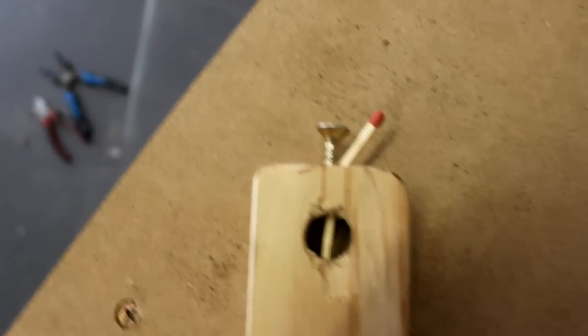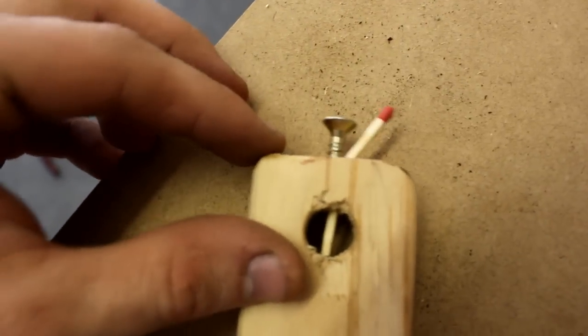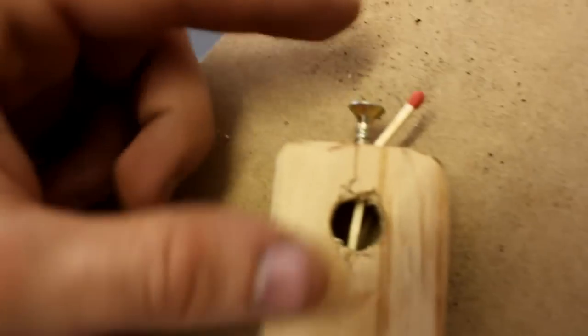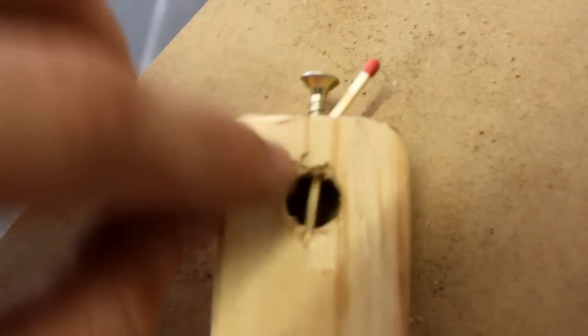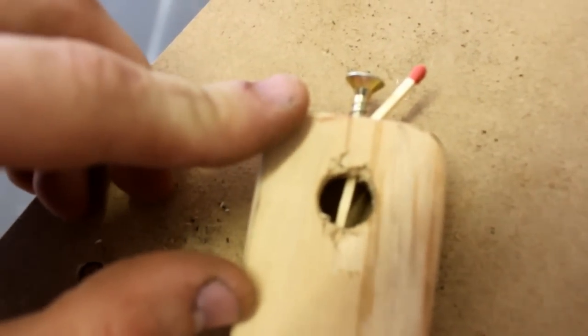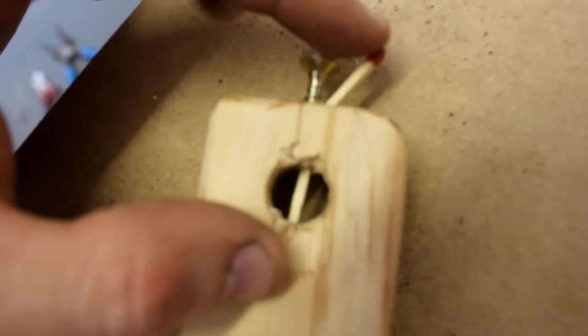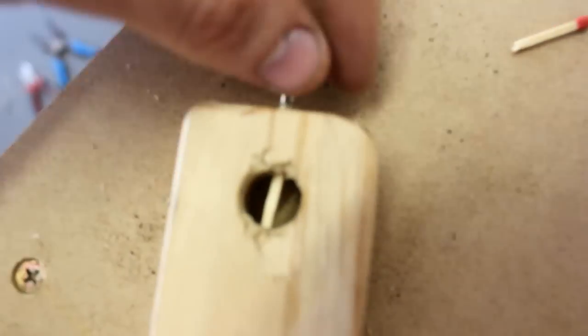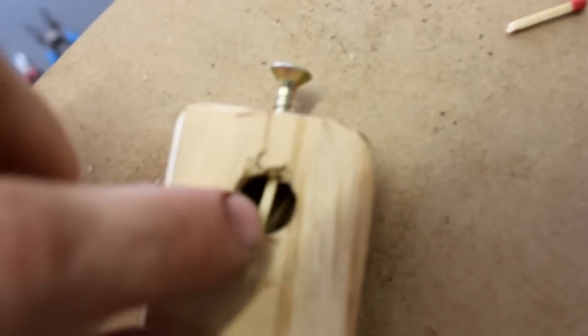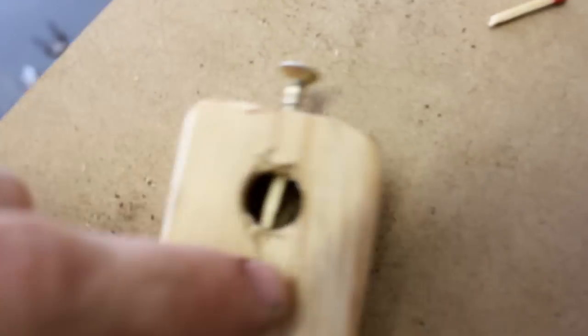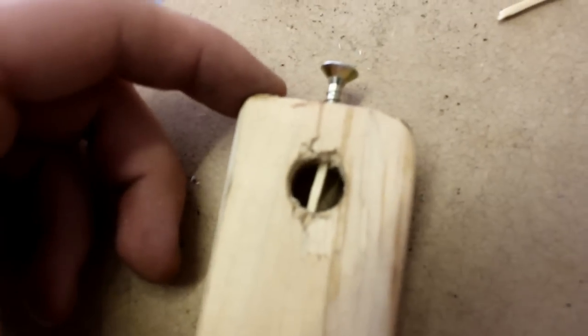If you ever tighten up a screw too much like I've just done and basically tear it, make it so you can't tighten it anymore, it will just spin inside the hole. One thing you can do to fix that is you take a regular match like this one. I've got it to fit into the hole already. I've also tightened it up just a little bit. What you do is you screw it in and you break off any excess and you've got a nice tight fit again.